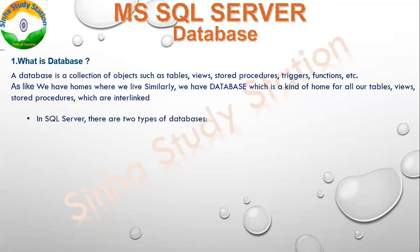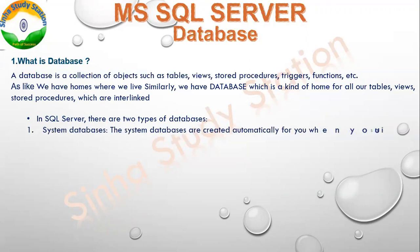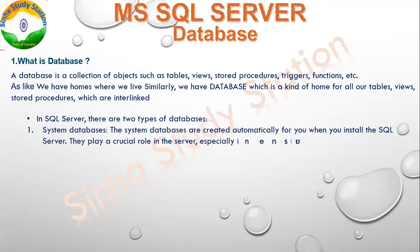Now we see that there are many types of databases. There are two types of databases. The first is the system database. The system databases are created automatically when you install SQL Server. They play a crucial role in SQL Server, especially in ensuring that database objects run correctly.